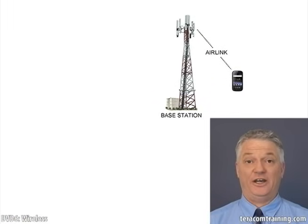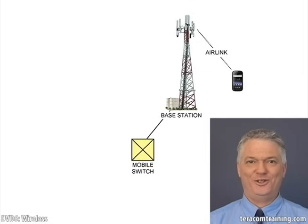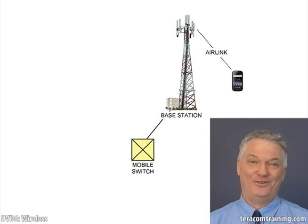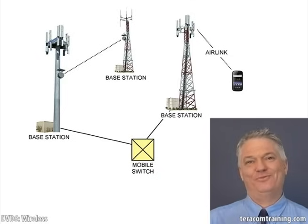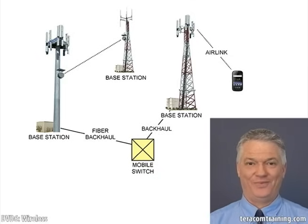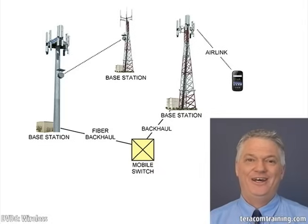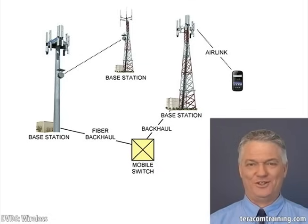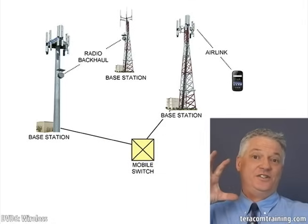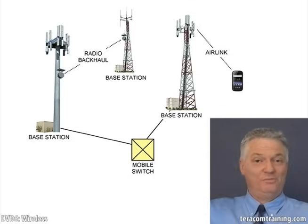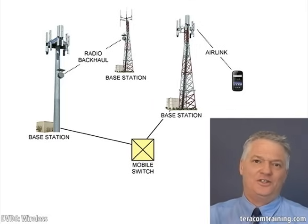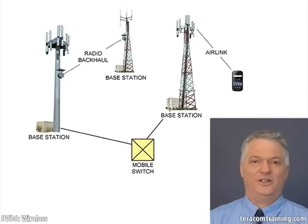The base station has to be connected back to a mobile switch — and by mobile switch, we don't mean the switch moves around, but that it's capable of keeping track of users moving around. This connection from the base station back to the mobile switch is called the backhaul. If fiber is available and the company is affiliated with the phone company that owns it, they will use fiber. In many other cases, dishes pointed sideways implement the backhaul using a point-to-point radio link, potentially going through multiple towers before reaching the mobile switch.